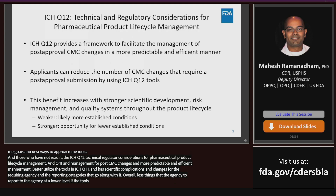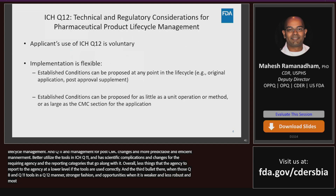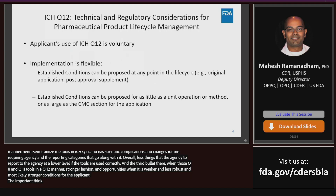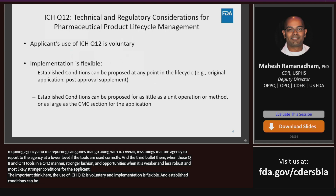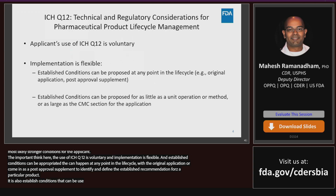When the Q8 through Q11 tools in the Q12 manner are used in a stronger fashion, there is opportunity for fewer established conditions; when weaker or less robust, it's likely going to be more established conditions for the applicant. An important note is that the use of ICH Q12 is voluntary. Implementation is also flexible in the sense that proposals for specified established conditions on a product lifecycle management document can happen at any point in the lifecycle — with the original application or as a post-approval supplement.